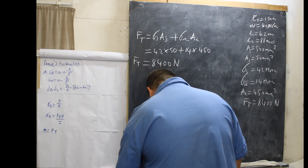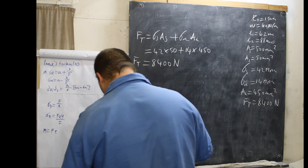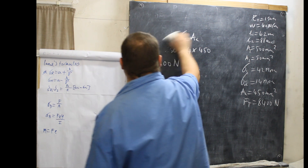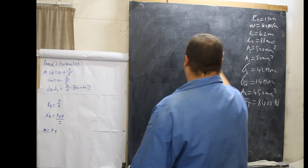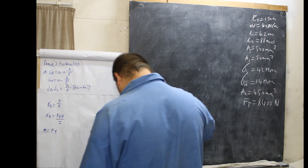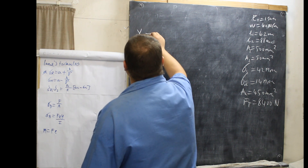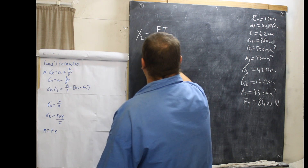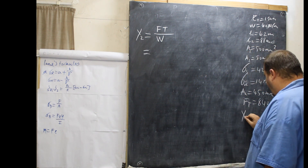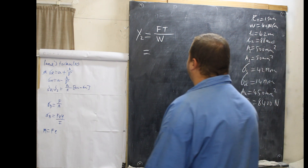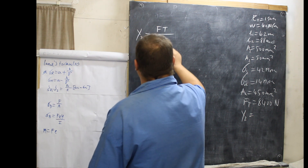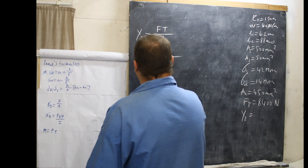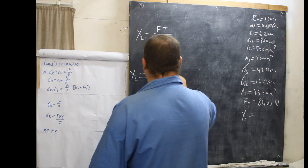Next we need to find the difference in height between the two supports. First we work out Y2, because Y2 comes in contact with Y0, and Y0 is what we'll need. Y2 equals F_t over W, so Y2 equals 8,400 over 60, which equals 140 metres.